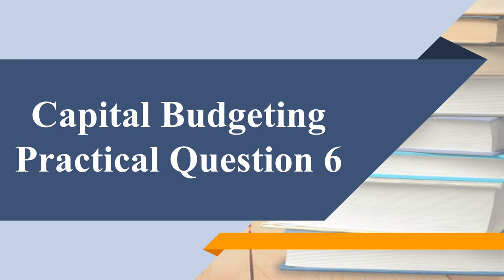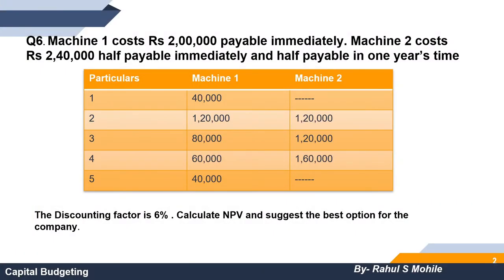We will see how to calculate NPV. Machine 1 costs rupees 2 lakhs, payable immediately. Machine 2 costs rupees 2 lakhs 40 thousand — half payable immediately and half payable in one year's time. Machine 1 inflows are 40,000; 1,20,000; 80,000; 60,000; 40,000. Machine 2 inflows are: dash, 1,20,000; 1,20,000; 1,60,000; dash. The discounting factor is 6%.